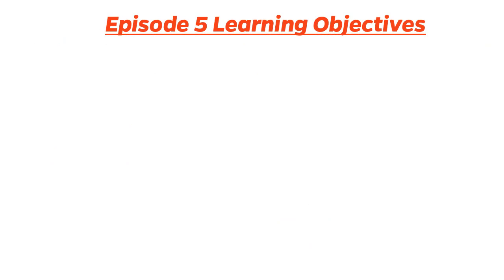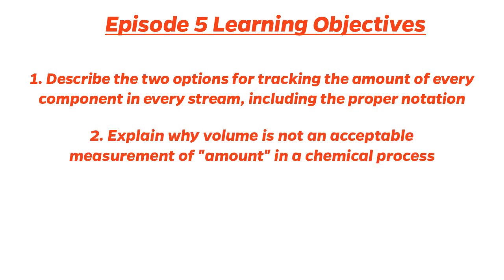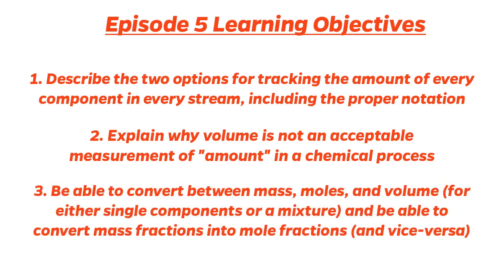Episode 5 Learning Objectives. Now that this episode is over, you should be able to: 1. Describe the two options for tracking the amount of every component in every stream, including the proper notation. 2. Explain why volume is not an acceptable measurement of amount in a chemical process. 3. Be able to convert between mass, moles, and volume for either single components or a mixture, and be able to convert mass fractions to mole fractions, and vice versa.